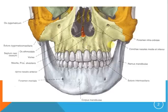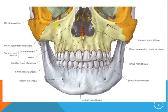This is a frontal view of the maxilla and here we have two important foramina. Foramina means hole — the left and the right foramina infraorbitalia. It's infra because it's below the orbita.